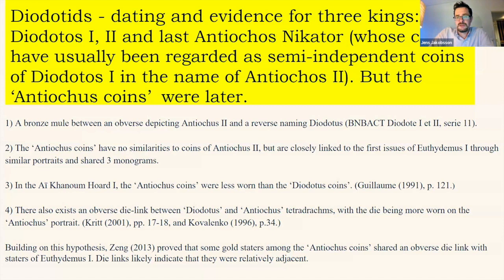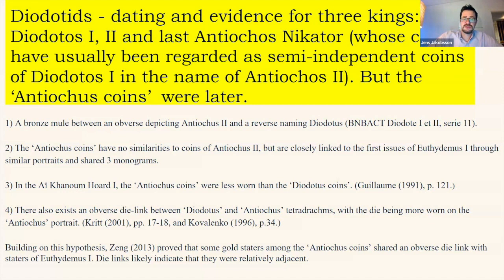This means we cannot say that the scarcity of coins of Antiochus II proves that his rule was interrupted by Diodotus. He may have ruled until he died in 246 BC, but his own coins may not have been issued in Bactria — just as many other mints issued coins of his popular father. The arguments I presented in my 2010 paper say that the Antiochus coins with the thundering Zeus and a portrait perhaps of Diodotus I were later than those issued in the name of Diodotus I.